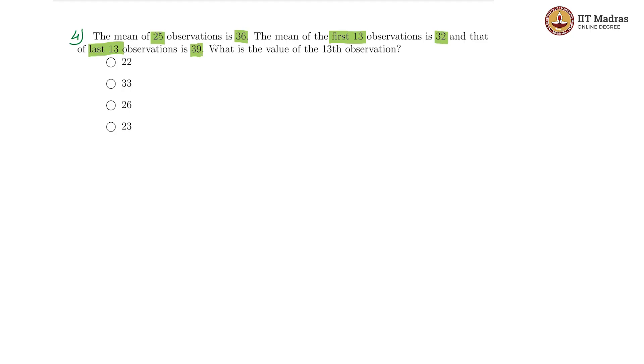Which means the 13th observation must be included in both of the calculations. So we have observations, let us call them t1, t2, t3, so on and look at the t13th one, it comes right in the middle and then we have till t25. So the first 13 would include these and the mean is 32. The last 13 would include these and the mean is 39. So this particular term is there in both calculations.